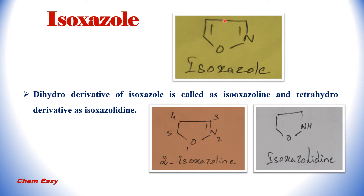This is the structure of Isoxazole, which consists of one oxygen atom and one nitrogen atom at the first and second positions. The dihydro derivative of Isoxazole is called Isoxazoline. This is one of the dihydro derivatives — 2-Isoxazoline. The completely saturated form, meaning the tetrahydro derivative of Isoxazole, is also called Isoxazoline.